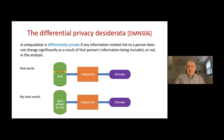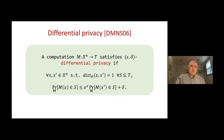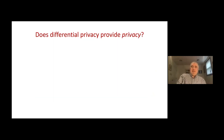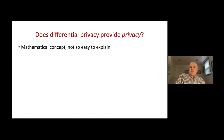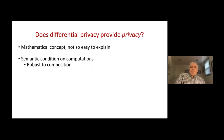I would feel much better if the same computation were performed with my data omitted. This doesn't happen in the real world, but I can require that the outcome in the real world and the ideal world would be somewhat similar. There's a measure of similarity, usually denoted epsilon, and this is the mathematical definition — I won't go over it in detail. The question is: does differential privacy provide privacy? Clearly yes, because privacy is part of the name — though it's a mathematical concept and not easy to explain to philosophers and legal scholars.